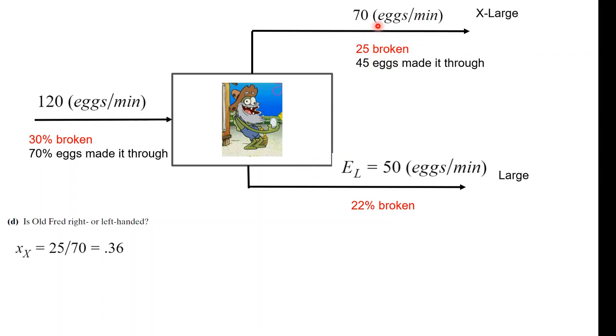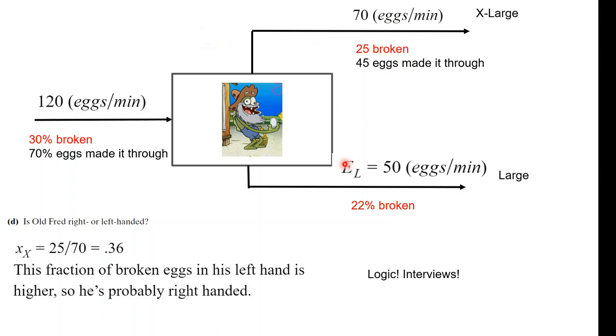So if this one has more broken eggs and this is his left hand, then he's probably right-handed, because he might be a little bit better at controlling his—this is even going into a little bit of neuroscience and psychology of, like, whatever you're dominant, blah blah blah.